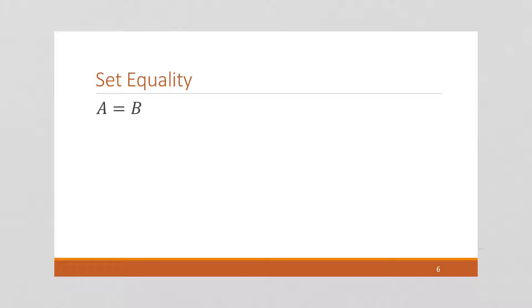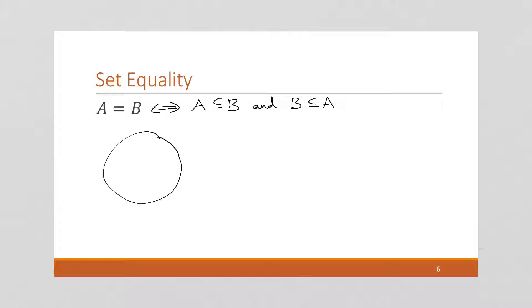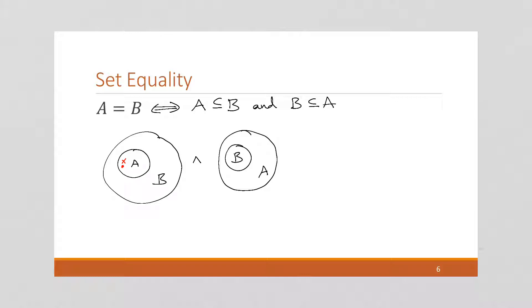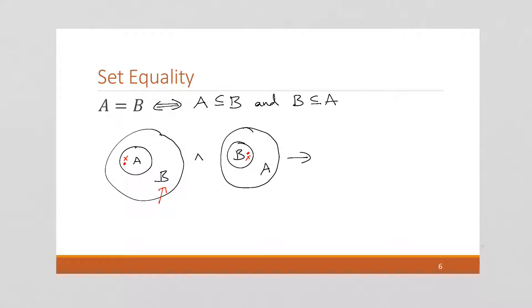Set equality: A equals B if and only if A is a subset of B and B is a subset of A. Because if A is a subset of B and B is a subset of A, then any element in A is also in B and any element in B is also in A — this gives us set equality. This is important: to prove that one set equals another, we actually have to prove both of these subset directions.